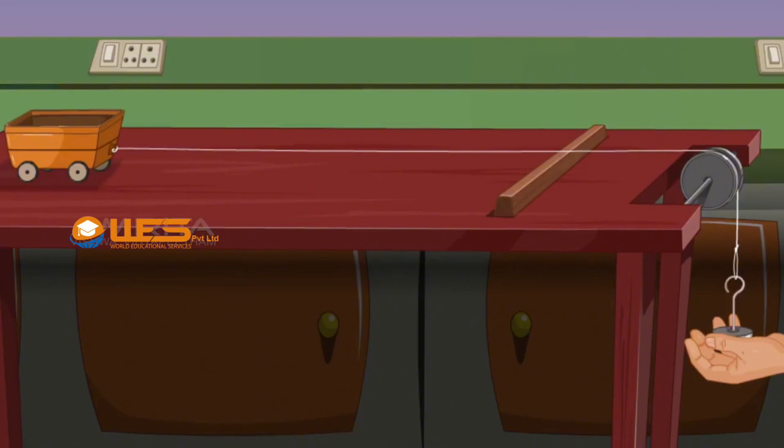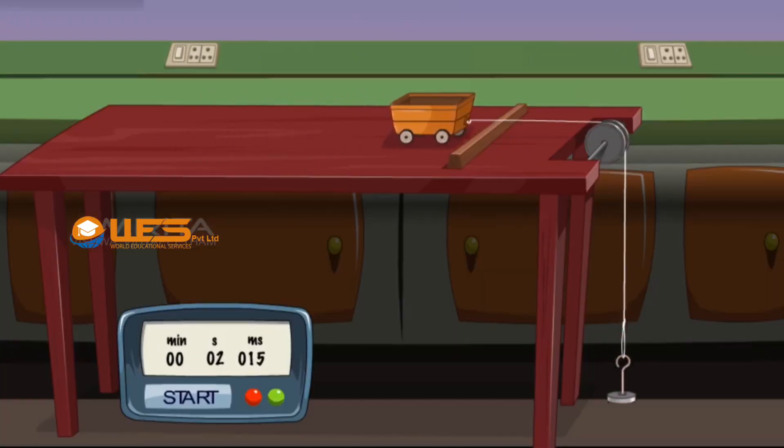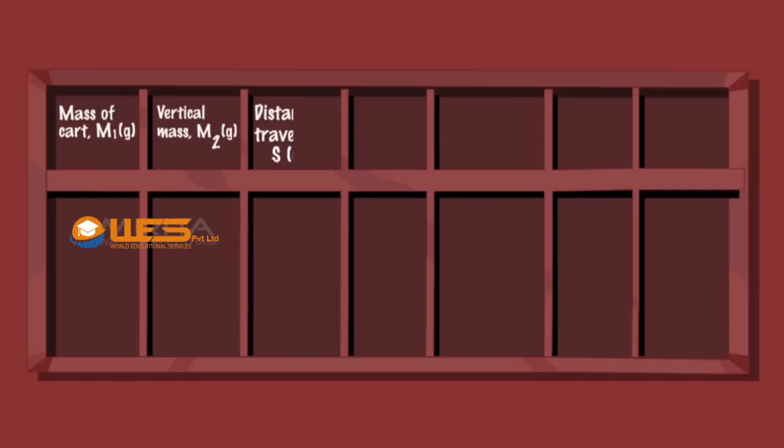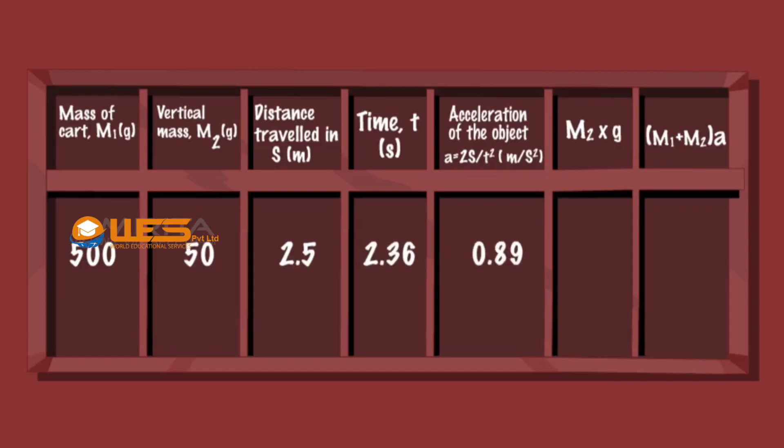As soon as the weight is released, the cart starts moving and stopped by the blockade. Note the distance moved by the cart and the time taken to travel the distance. Calculate the acceleration of the object.